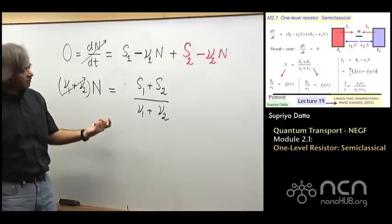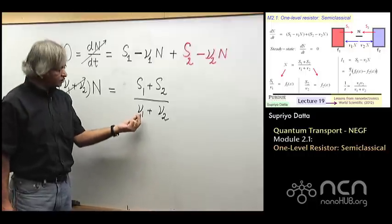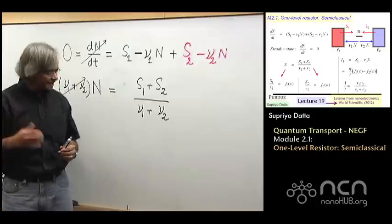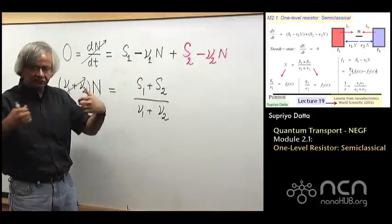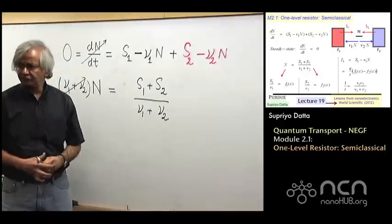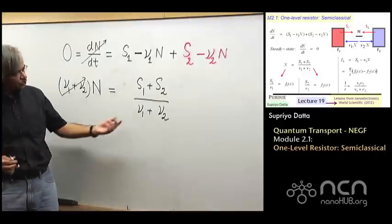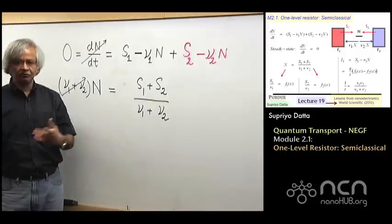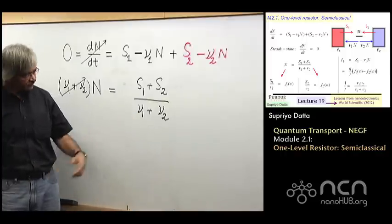Now, you see, we have got these two parameters here, this nu 1 and nu 2. That tells you the, this per second, how easily electrons can get out into the contacts. If you have very good contacts, those could be like once every picosecond. If you had a really bad contact, it could be like once every second, for example.